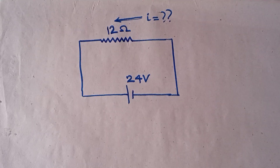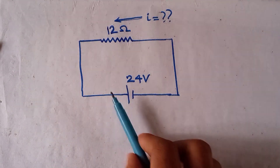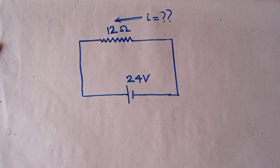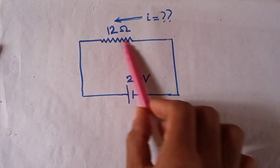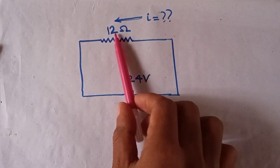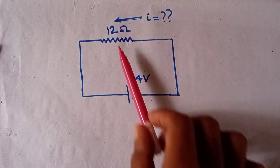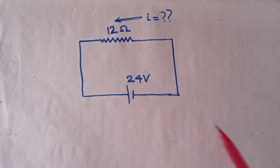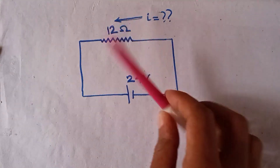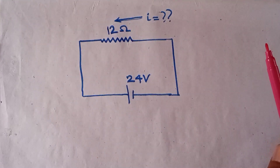Here is a very simple electrical circuit. This circuit has a resistor with resistance value 12 ohms and a battery. The resistor and battery are connected by conducting wire. We are asking how much current will flow through the resistor in this direction.